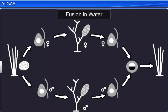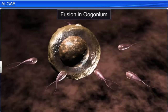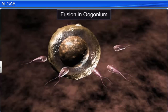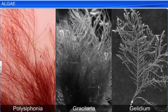Brown algae reproduce through fragmentation, and asexually through biflagellate spores. On the other hand, in sexual reproduction, the gametes unite either in water or within the oogonium. Rhodophyceae is another class of algae, whose members include Polysiphonia, Gracilaria, and Gelidium.